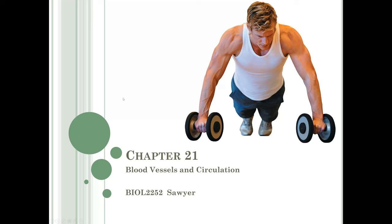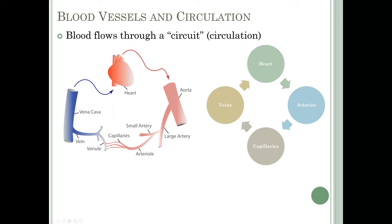This is Chapter 21, Blood Vessels and Circulation. We'll start with a brief introduction. As we covered before, blood is flowing through a circuit, and that's why it's called circulation. We covered in the last chapter how there are actually two circuits: the systemic circuit and the pulmonary circuit.